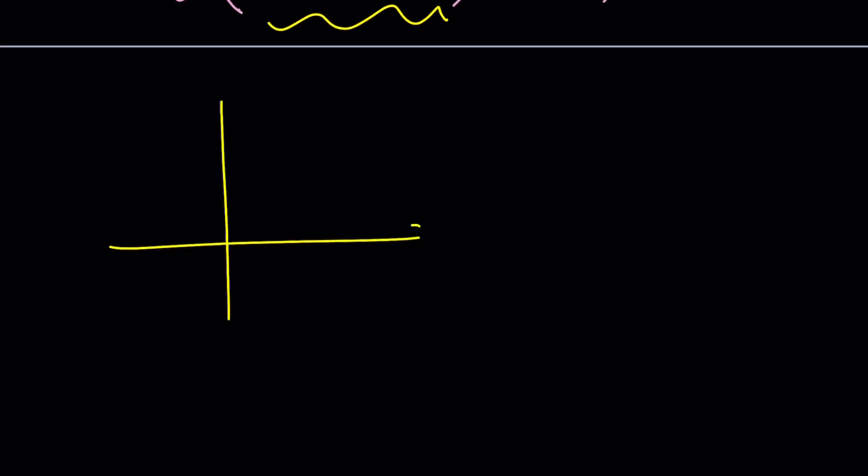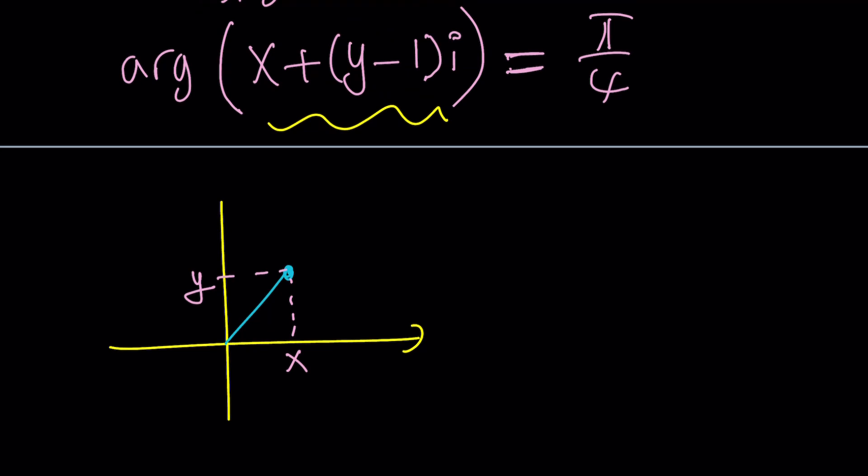So your complex number has an argument of π over 4, which is, by the way, 45 degrees, and that means the following: its real and imaginary parts are equal. But notice that the imaginary part is not y, it's actually y minus 1. So this is y minus 1, and totally ignore the x and y axes here, and this is π over 4.